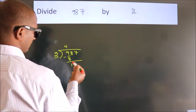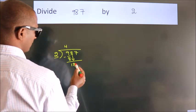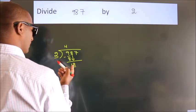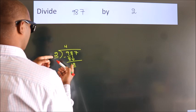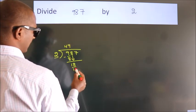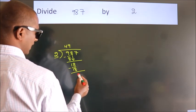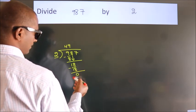After this, bring down the beside number. 8 down, so 18. When do we get 18 in the 2 table? 2 times 9, 18. Now we subtract and get 0.